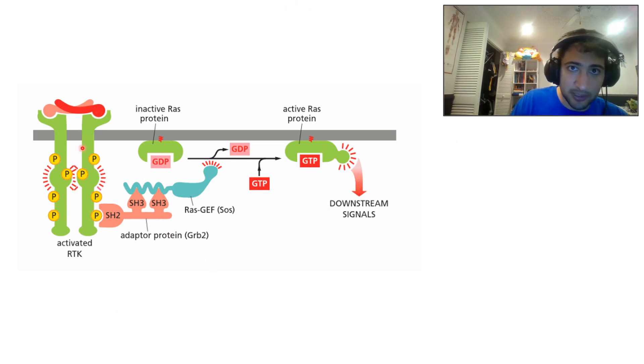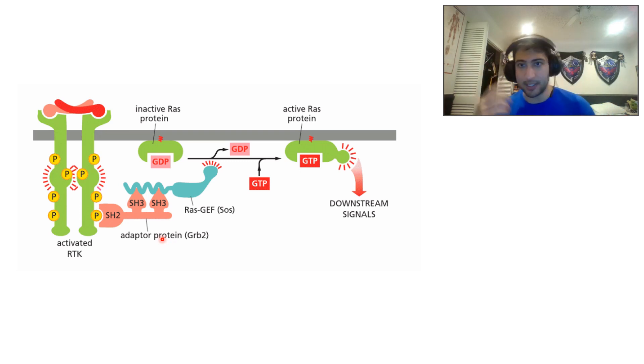So the receptor tyrosine kinase, once a signal molecule binds to it, you're going to get your cross-phosphorylation, and then that's going to lead to grabbing an adapter. We talked about that in the cell signaling lecture. So just to review, the receptor tyrosine kinase activates, cross-phosphorylates, each one phosphorylates the other, and that recruits an adapter protein called GRAB.